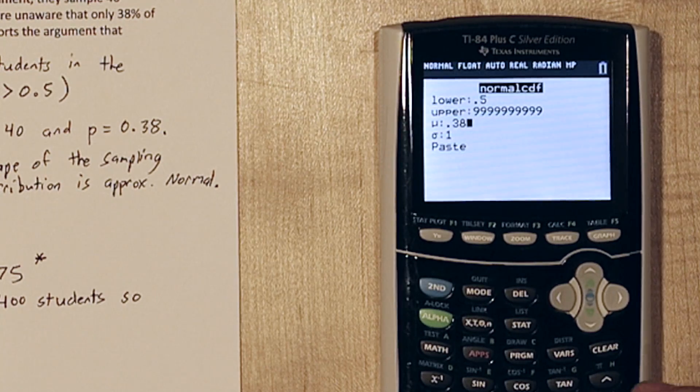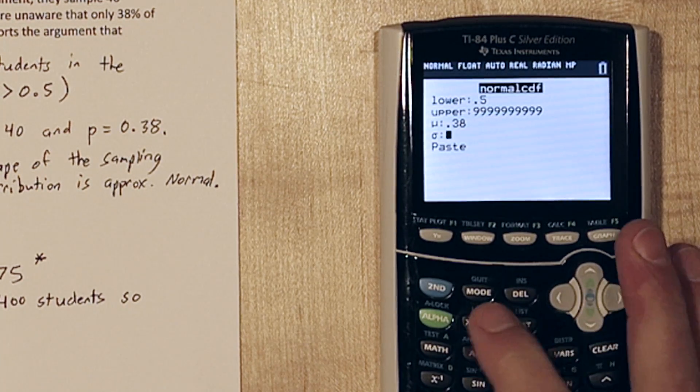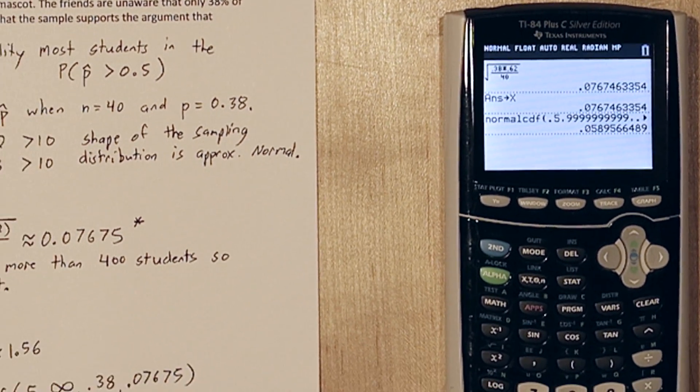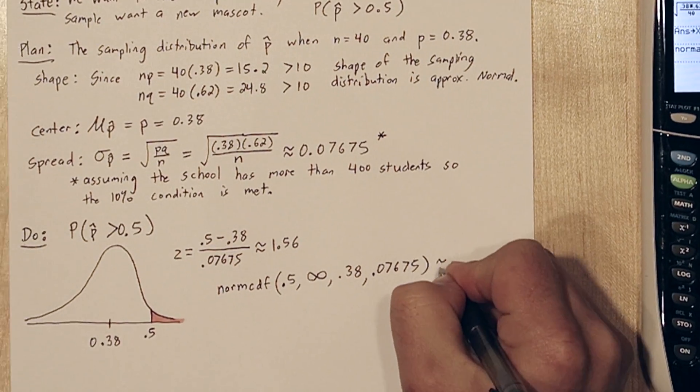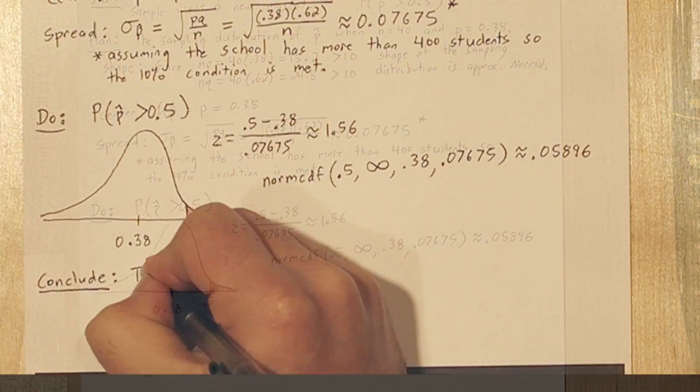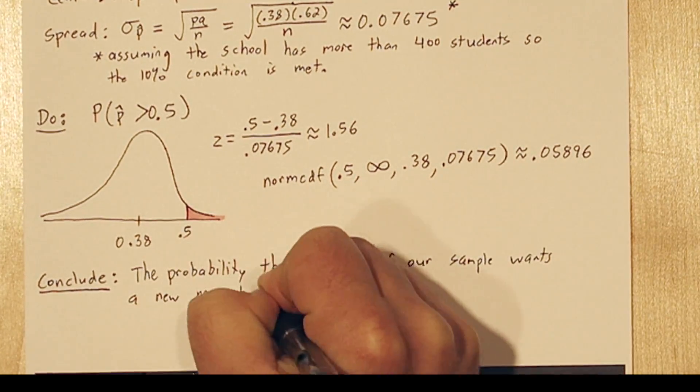Our mean is 0.38, and we stored our standard deviation as x, so we can just type x here. This gives us a probability of about 0.05896, so the probability the majority of our sample wants a new mascot is about 0.0586.